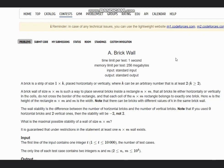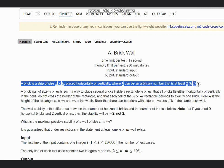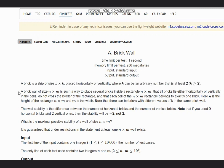Hello everyone, welcome to the channel. Here we're discussing the question Brick Wall on Codeforces. The problem states that a brick is a strip of size 1×k placed horizontally or vertically, where k can be any arbitrary number that is at least 2. A brick wall of size n×m is such a way to place several bricks inside a rectangle.